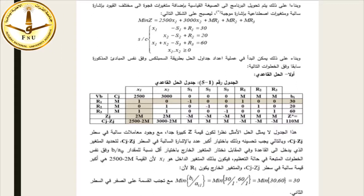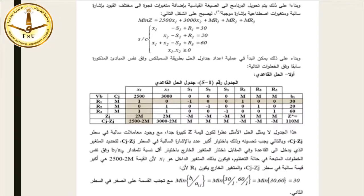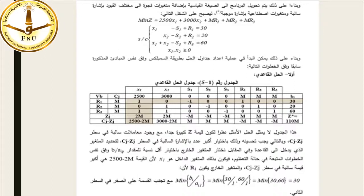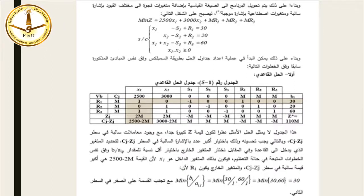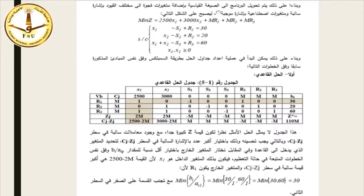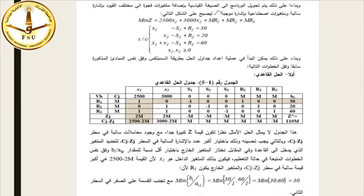وفق نفس الخطوات المتبعة في حالة التعظيم، يكون المتغير الداخل هو X1 لأن القيمة 2500-2M هي أكبر قيمة سالبة في السطر Cj-Zj. والمتغير الخارجي يكون R1 لأن النسبة B1/A1 هي 30/1=30، وهي أقل نسبة مع تجنب القسمة على الصفر.